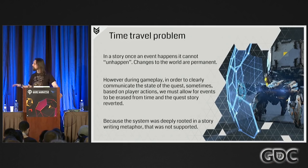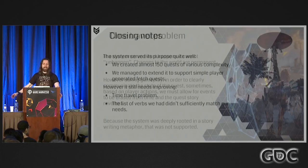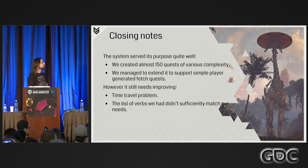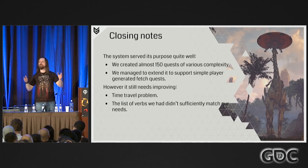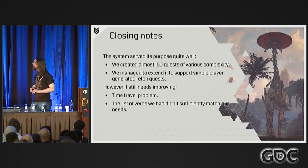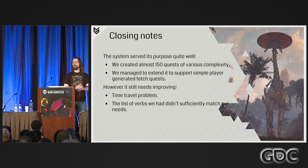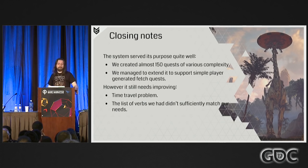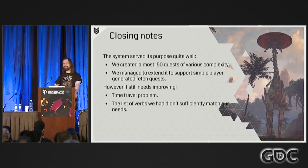To close this up: the system we created served our purposes quite well. A team that never created a quest-based game before managed to create almost 150 quests of various complexity, and as I've been told, some of them were quite well received. We also had the unexpected success of creating player jobs, which is one of the coolest quality-of-life features we have. But the system is not perfect — we still need to fix our time travel problem, and the list of verbs didn't sufficiently meet our needs: some were redundant, some overly specific. We just need to revise them, and everything will be fine.